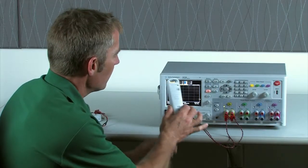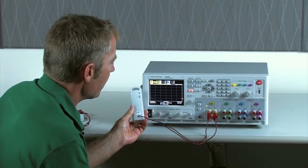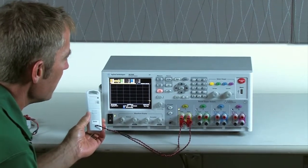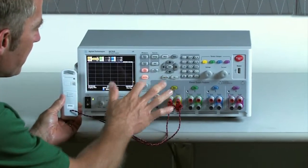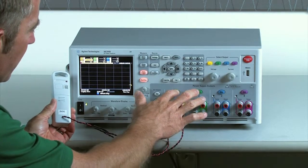As you can see, we've replaced the batteries with the N6705B DC power analyzer. I've set up the data logging for two minutes, so we'll go ahead and start that. Then I'll turn on the power to our wireless sensor.